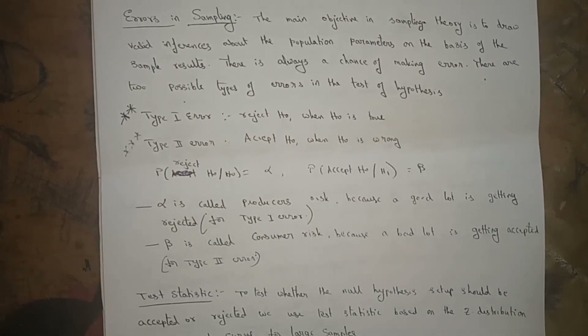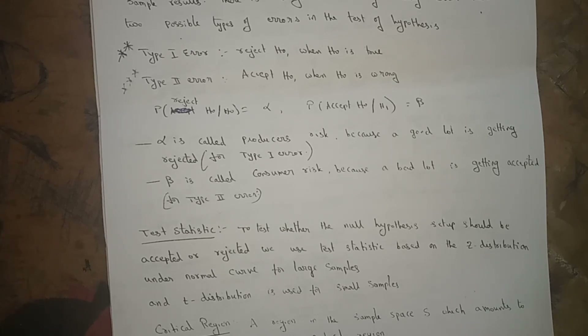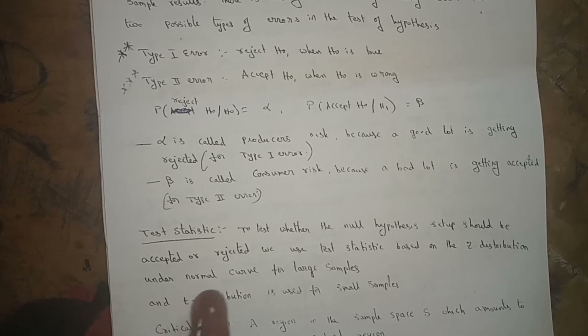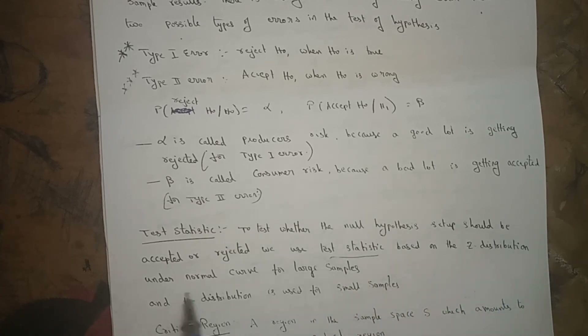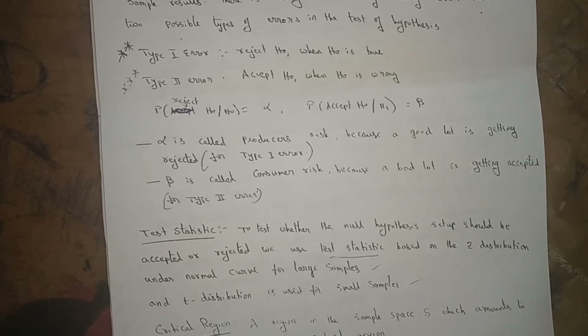Test statistic: to test whether the null hypothesis should be accepted or rejected, we use the test statistic. For large samples, we use the z distribution under the normal curve. For small samples, the t distribution is used.